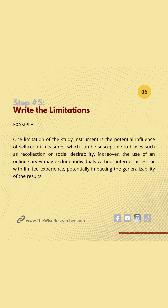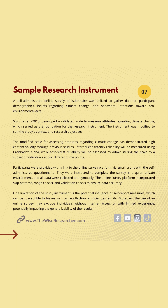Step number five: write the limitation. One limitation of the study instrument is the potential influence of self-report measures, which can be susceptible to biases such as recollection or social desirability. Moreover, the use of an online survey may exclude individuals without internet access or with limited experience, potentially impacting the generalizability of the results. And this is how the research instrument would look like in your research paper.